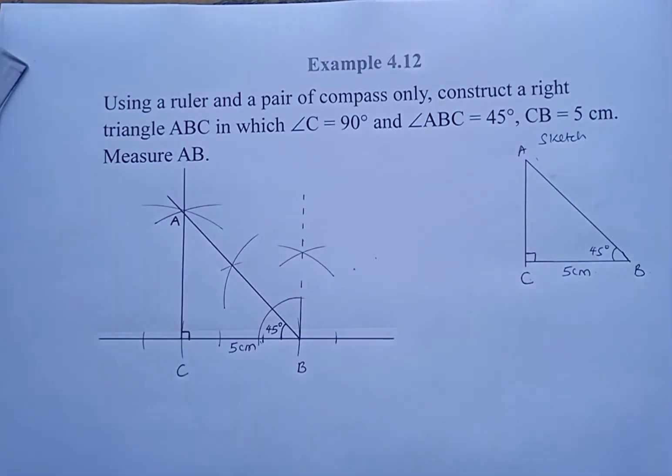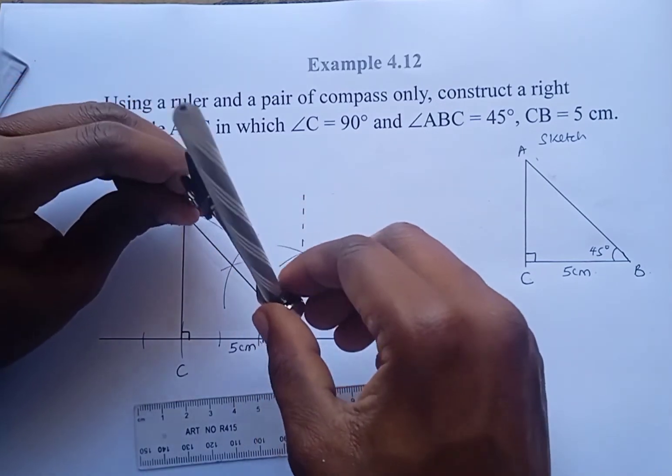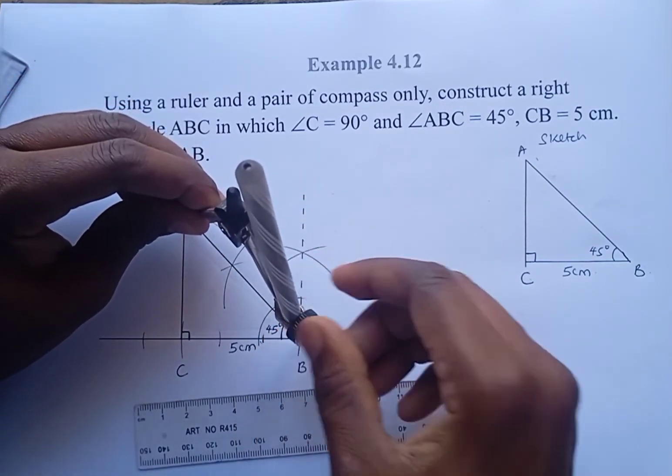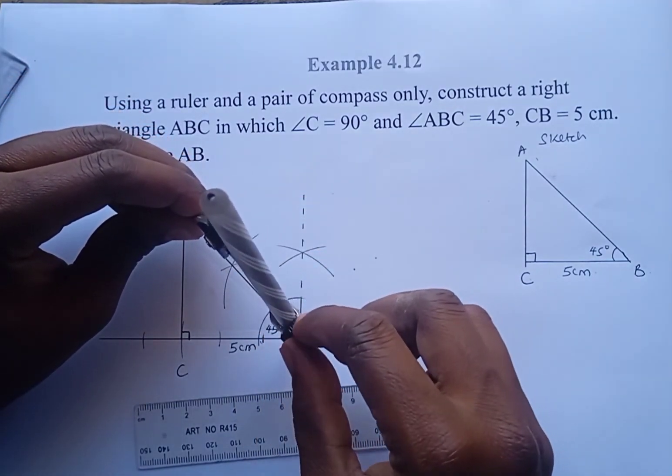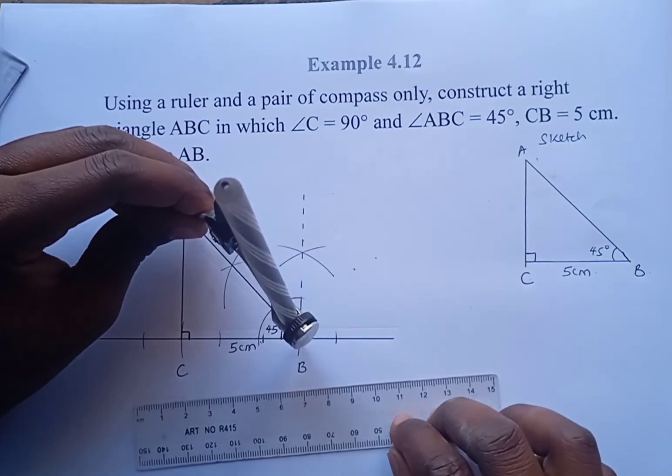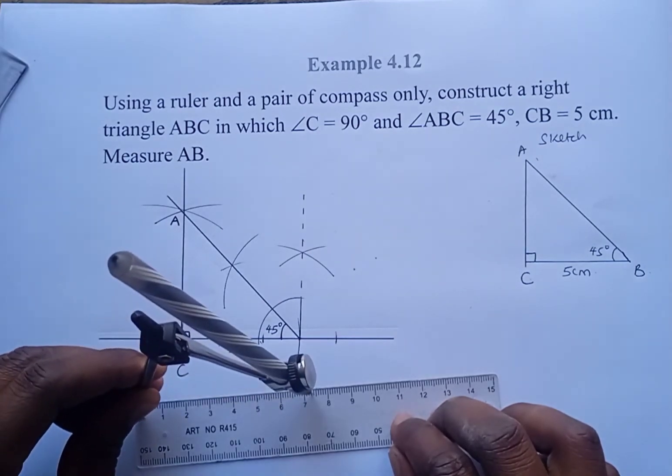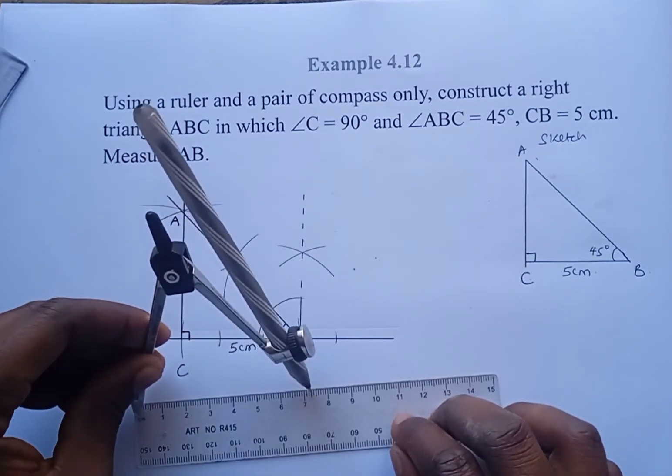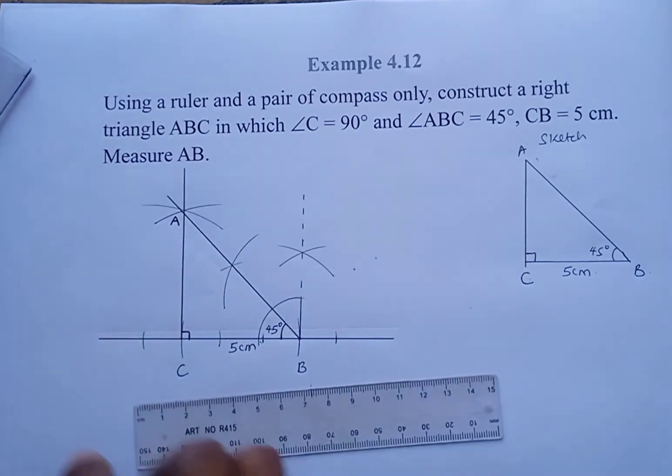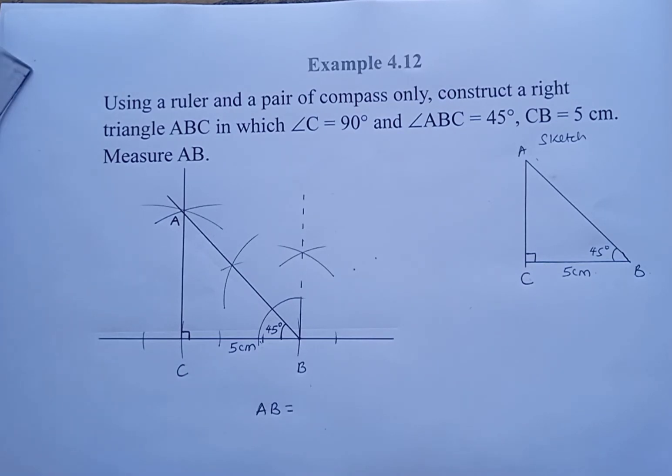The next thing now is to answer the question. We measure the length AB. Therefore we measure the length AB and we use the compass, then we transfer the length to the ruler and we can read. It is 7.3 centimeters. AB equals 7.3 centimeters.